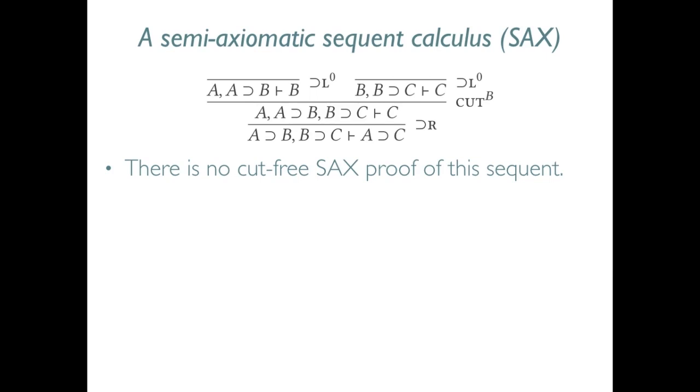For example, there is no cut-free proof of the sequent A implies B, B implies C, turnstile A implies C.